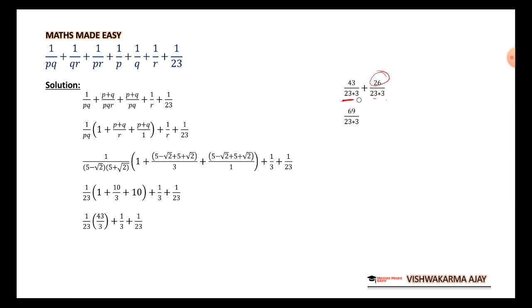Now since the denominator of both terms are the same, we can add them directly. 43 plus 26 is 69, 69 upon 23 times 3. Now 23 times 3 is nothing but 69, so it's 69 upon 69 is 1.